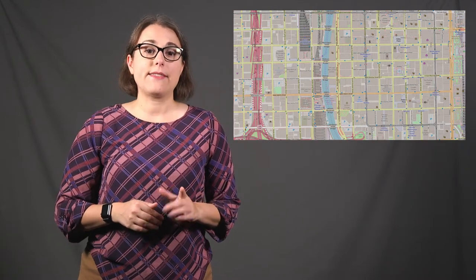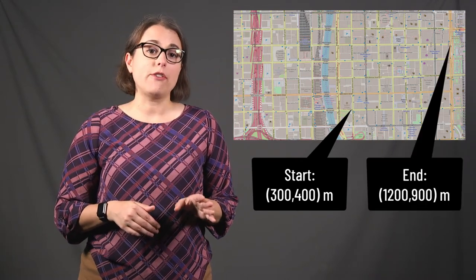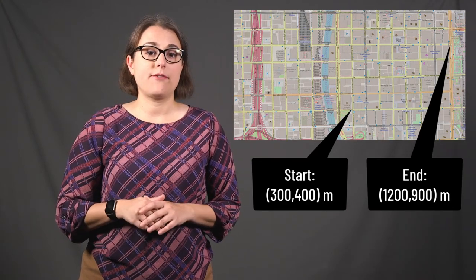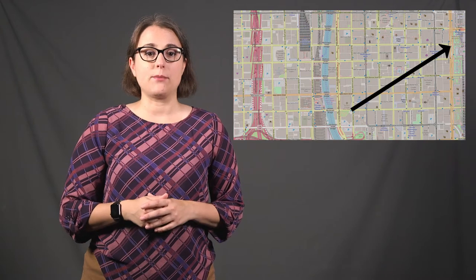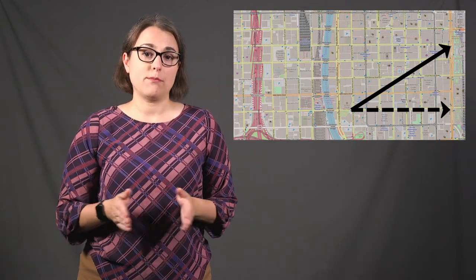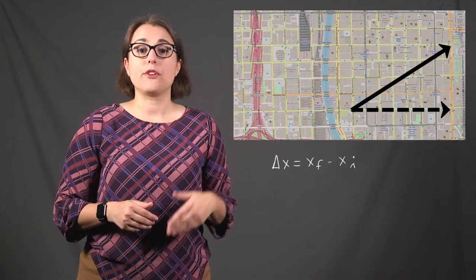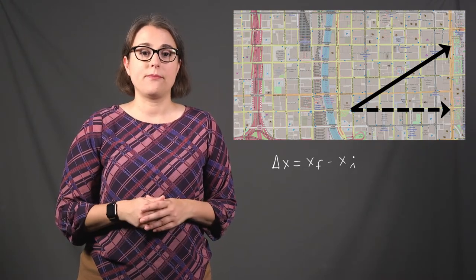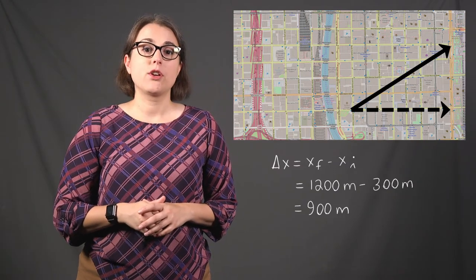As an example and a good review for calculating the magnitude of a vector: suppose the starting location is (300, 400) meters and the ending location is (1200, 900) meters. Regardless of the path taken, we can draw a vector from start to finish — that vector denotes the displacement of the object. To calculate its magnitude, we find the two components. The horizontal component, delta x, equals the final x minus the initial x: 1,200 minus 300, which is 900 meters.